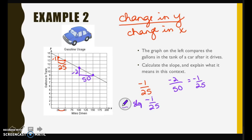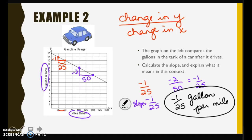I need to talk about what it means in this context. So I need to read the labels of the graph. The gallons are my Y and my miles driven are the X. So it looks like negative 1/25. It loses one gallon for every 25 miles you drive, or it goes negative 1/25 of a gallon per mile. We lose one gallon for every 25 miles we drive.